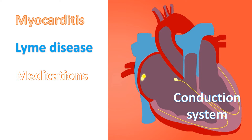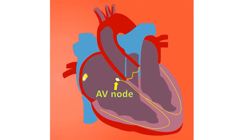Sometimes first degree AV block can be due to age-related degeneration in the electrical conduction system of the heart. Calcium deposits in the aortic valve between the left ventricle, the lower left chamber, and the aorta which receives the blood pumped out, can spread to the conduction system and produce first degree AV block.